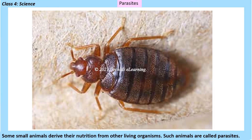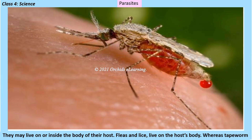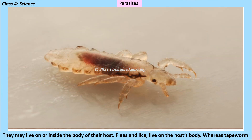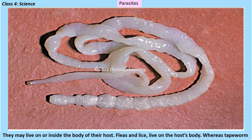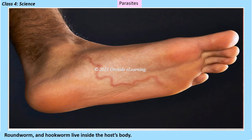Some small animals derive their nutrition from other living organisms — such animals are called parasites. They may live on or inside the body of their host. Fleas and lice live on the host's body, whereas tapeworm, roundworm, and hookworm live inside the host's body.